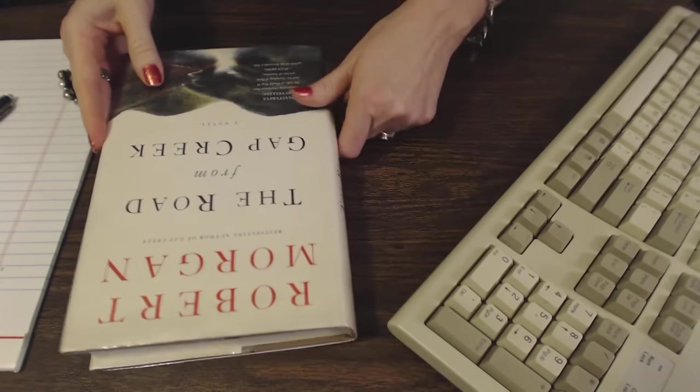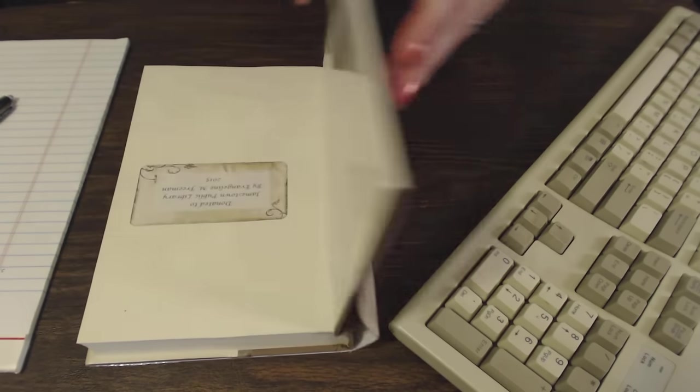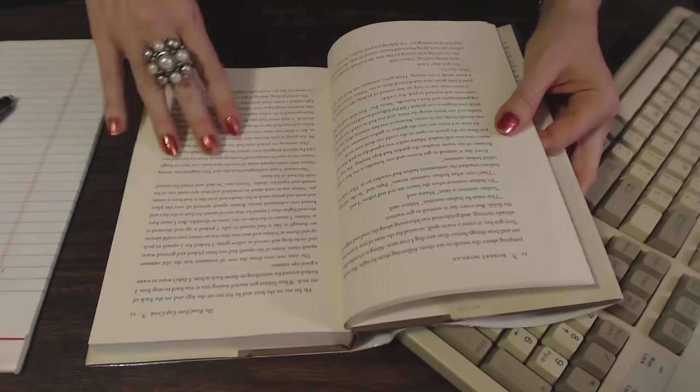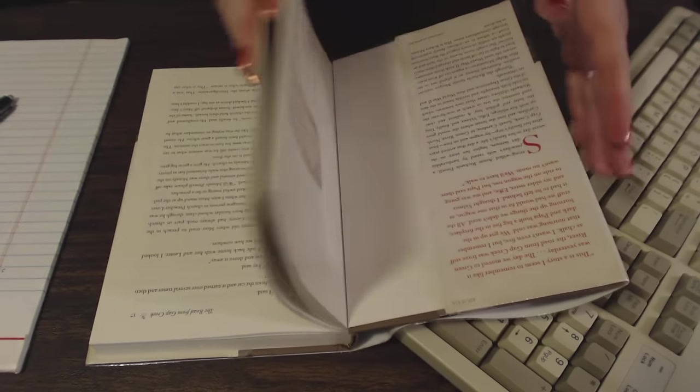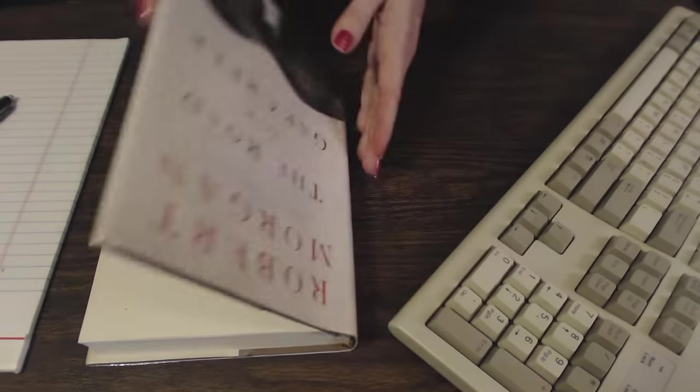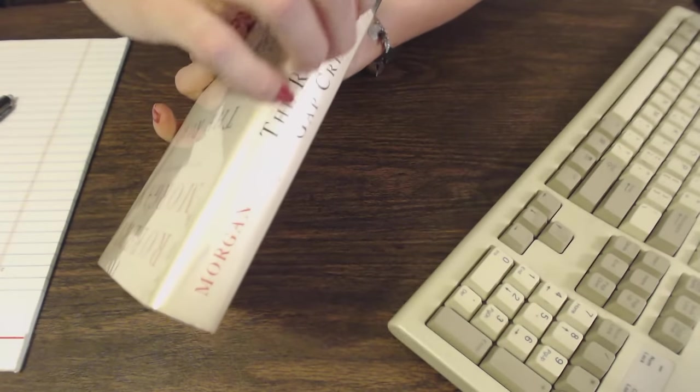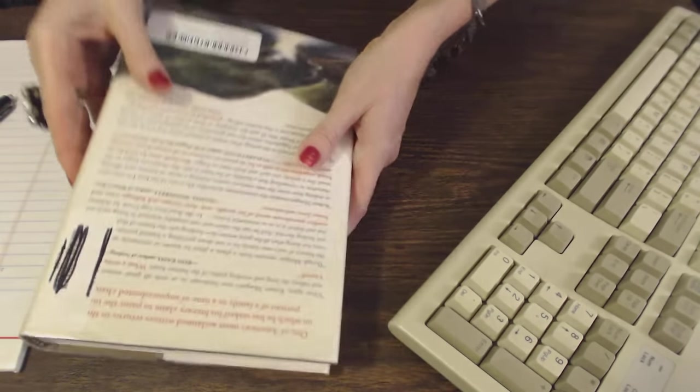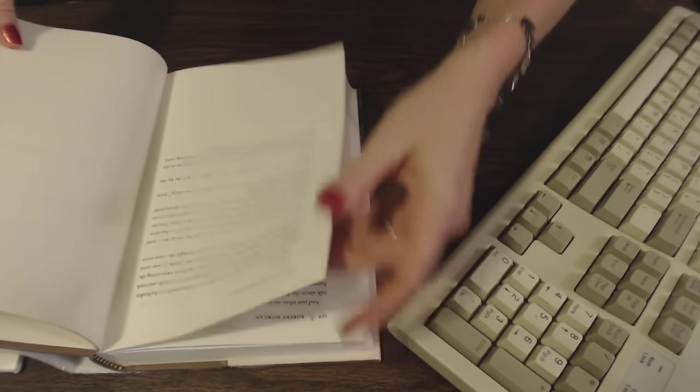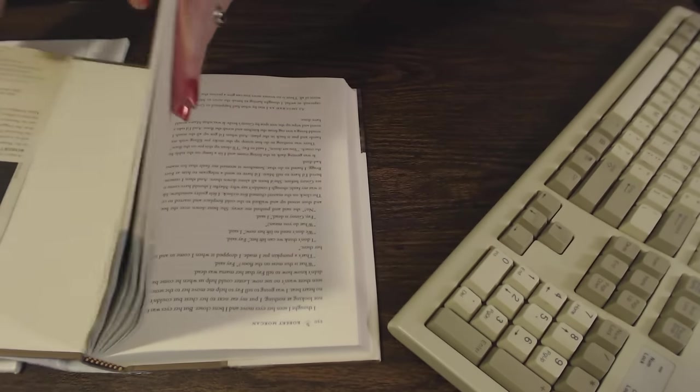And the next book that was returned was by Robert Morgan, The Road from Gap Creek. It is a novel. It is in good condition, very good condition I would say. The dust jacket is intact, looks good. Look at the back, looks fun, looks nice. On the dust jacket looks very good, no marks. There appear to be no marks in the book.